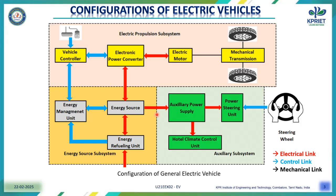The third subsystem is the auxiliary subsystem. It gets power from the energy source and produces the auxiliary power supply to power the steering unit — amplifying the rotation of the wheels when turning. The same auxiliary power is applied to the climate control unit to ensure proper climate control inside the electric vehicle. Together, these all produce the necessary operation of the electric vehicle system.